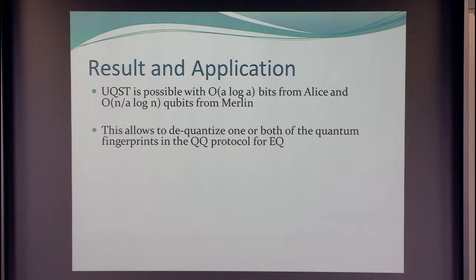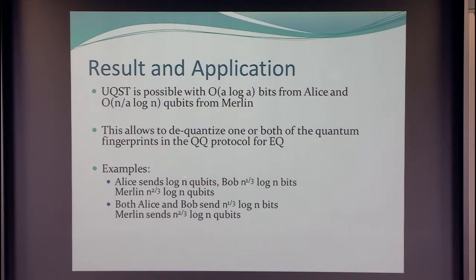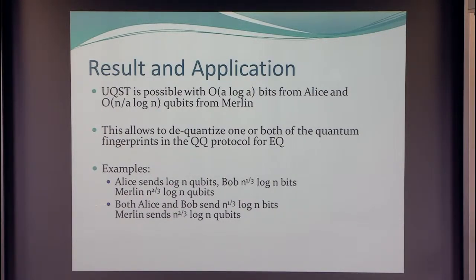You have one remaining copy, meaning you can have a protocol with log A bits from Alice and (n/A)·log n bits from Merlin, for any value A. We can use this to de-quantize the fingerprints in the quantum fingerprinting protocol with a quantum prover and either quantum or classical messages from Alice and Bob. For example, it's possible for Alice to send log n qubits, Bob to send n^(1/3) bits, and Merlin n^(2/3) qubits. These things are not possible without the prover, and even the sum is smaller than square root n, but the trade-off still gives n.